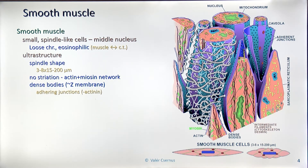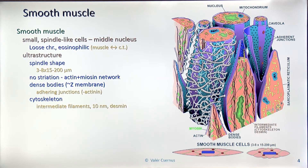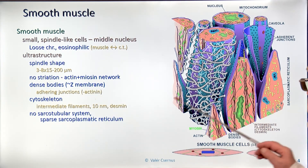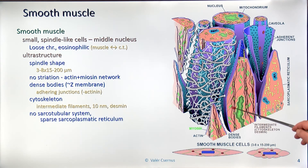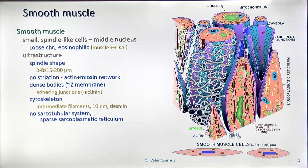These filaments sometimes have so-called dense bodies, which behave like Z membranes in skeletal muscle. The ends of the myofilaments are connected into the cell membrane with adherens junctions of the alpha-actinin type. Inside, we have a cytoskeleton consisting of intermediate-type filaments, 10 nanometers in diameter, of the desmin type. There is no proper sarco-tubular system; even though smooth muscle is controlled by electrical signals and innervation, the cells are so small that diffusion is quick enough to carry the signal across the entire cell, so a rich sarcoplasmic reticulum is not necessary.